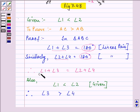Let us say angle 1 is 80 degrees and angle 2 is 100 degrees. Then angle 3 will be 100 degrees and angle 4 will be 80 degrees since their sum is equal to 180 degrees. So this means angle 3 is greater than angle 4.